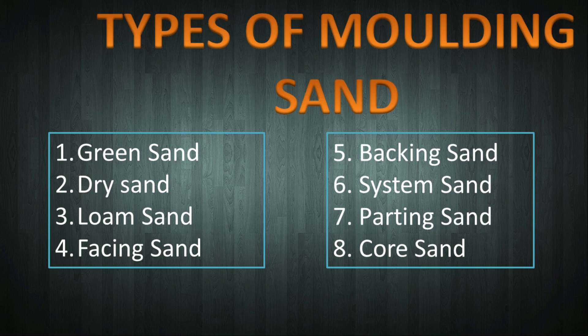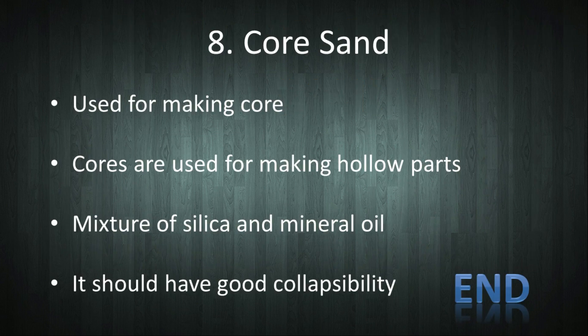In summary: green sand is the building block for molds; dry sand is obtained after drying green sand; loam sand contains loam; facing sand is the first sand which comes in contact with molten metal and forms the face of the mold; backing sand is for backing of the facing sand; system sand is used in machine molding; parting sand is used at the parting surface; and core sand is used for making cores. These are the types of molding sands. I hope you understand the variety of sands used in casting.